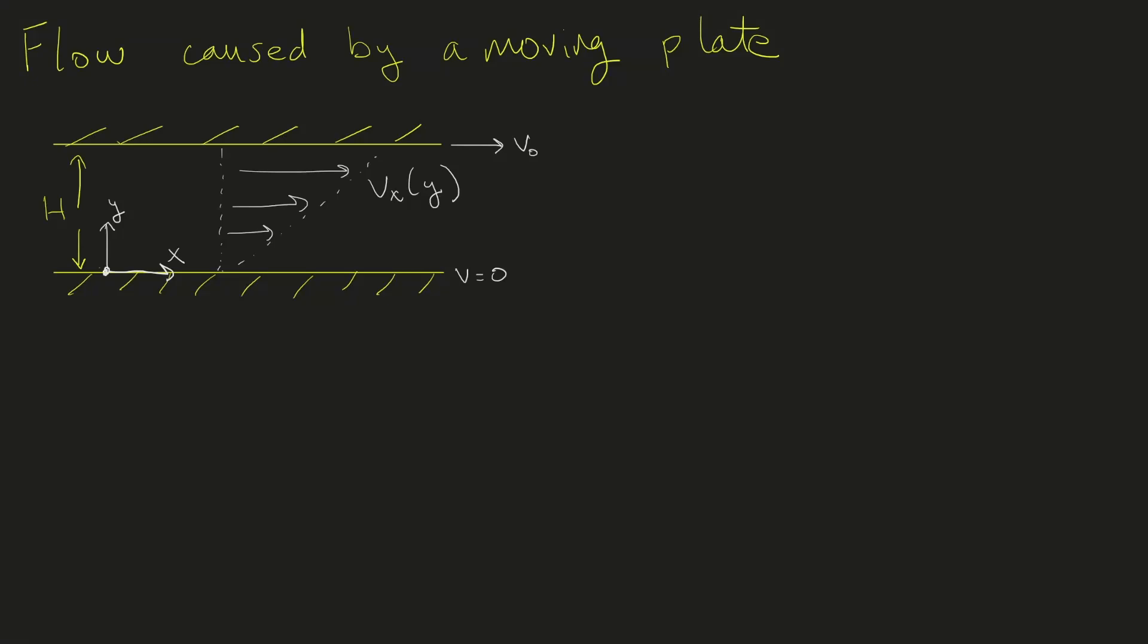Hello everyone. In this video we're looking at two parallel plates with fluid in between. The top plate moves at velocity v₀, the bottom plate is stationary, and we want to figure out the velocity profile v(y) in the x direction. Our coordinate system has y pointing up and x pointing horizontally to the right.